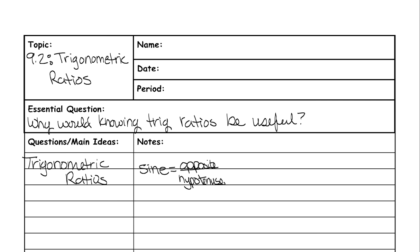Another one of the buttons that you saw next to 'sin' was 'cos,' and that actually stands for cosine. Cosine is equal to adjacent over hypotenuse. The last button you've seen before was the 'tan' button, and that stands for tangent. Tangent is opposite over adjacent.